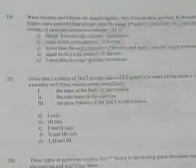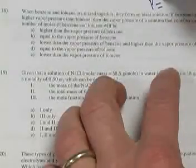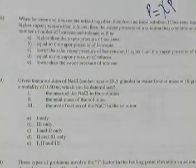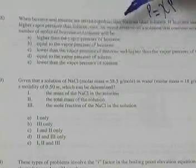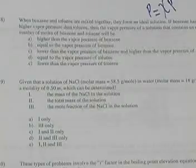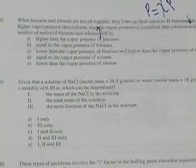Number 18: benzene and toluene are mixed to form an ideal solution. An ideal solution follows Raoult's law: observed vapor pressure equals the mole fraction of the solvent times the original vapor pressure. If benzene has a higher vapor pressure than toluene, and you have equal moles of both, the mixture's vapor pressure will be lower than pure benzene but higher than pure toluene — meeting in the middle. That's letter C.